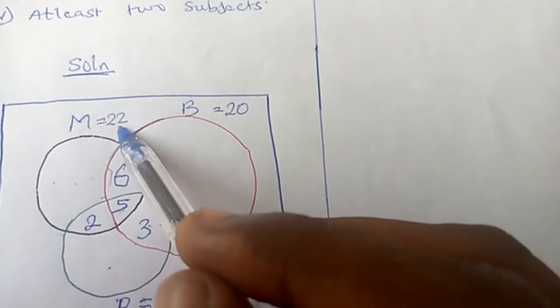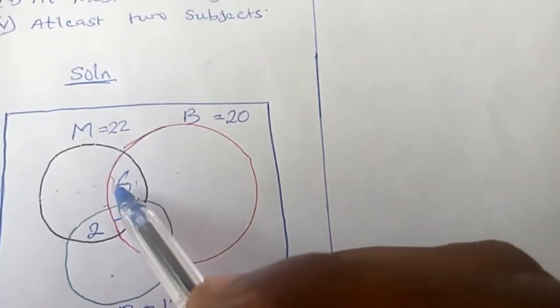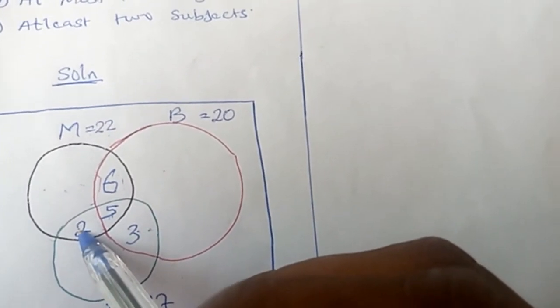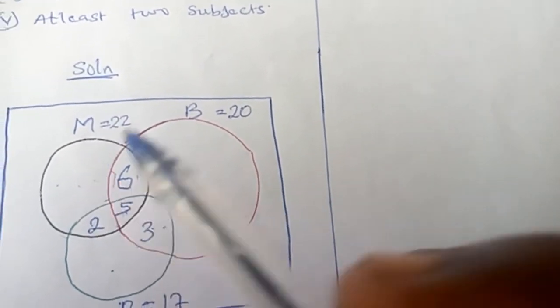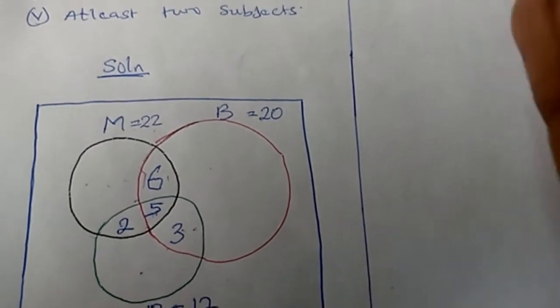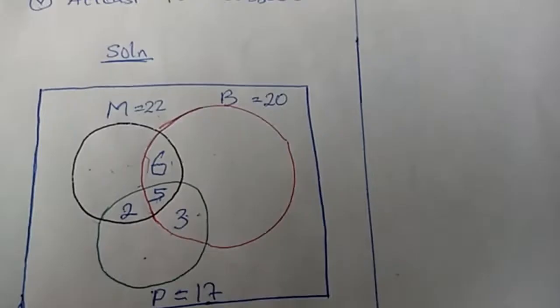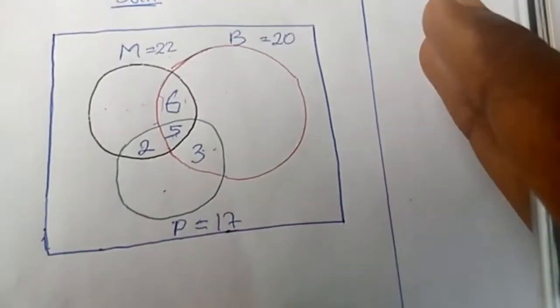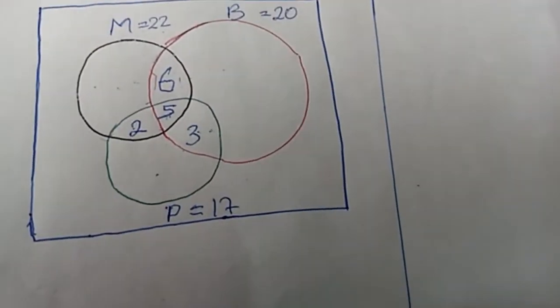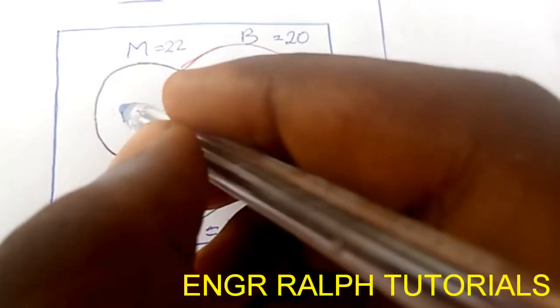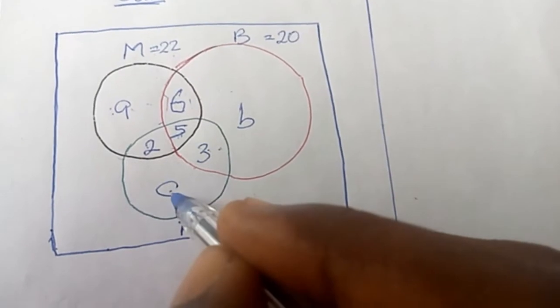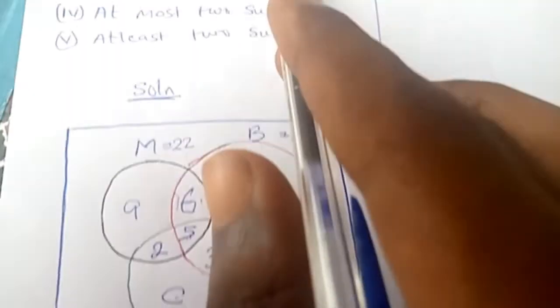This is the Venn diagram representing the information — this is what the question asks: draw a Venn diagram to illustrate the information. You can label the math-only region as A, the biology-only region as B, and the physics-only region as C.